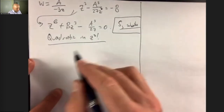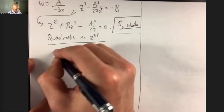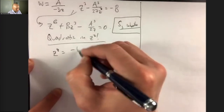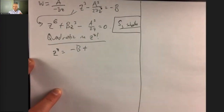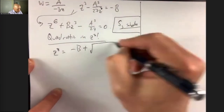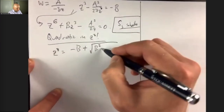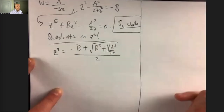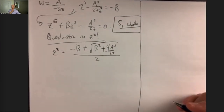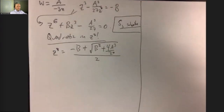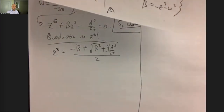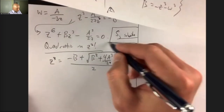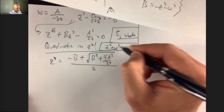So we have a quadratic in Z³. Using the quadratic formula: Z³ = (−B ± √(B²/4 + A³/27)) / 2 (with the coefficients of our quadratic being 1, B, and −A³/27). Similarly, W³ = (−B ∓ √(B²/4 + A³/27)) / 2. The quantity B²/4 + A³/27 is called the discriminant of the cubic. And y = W + Z, so that's our solution.